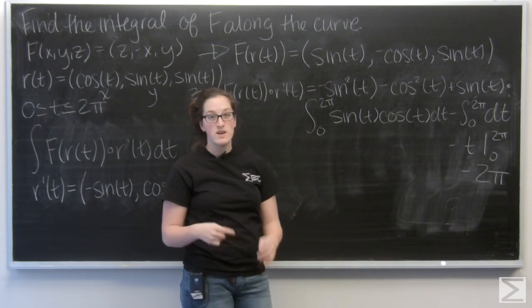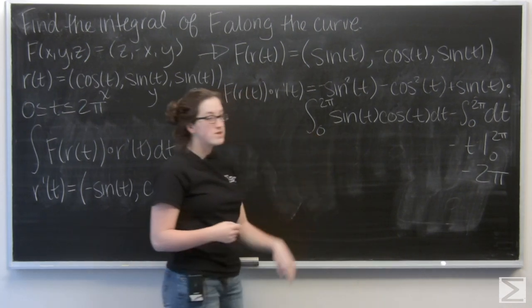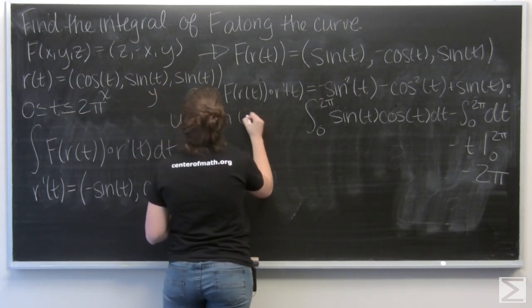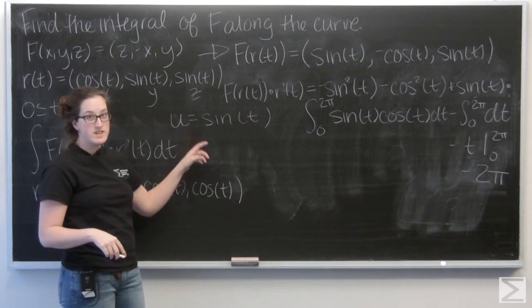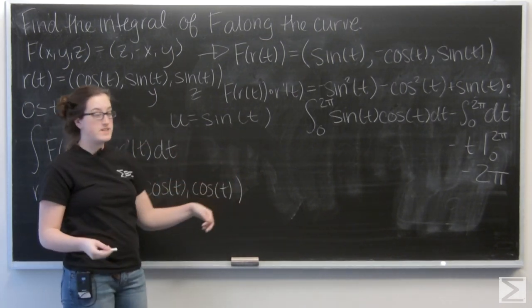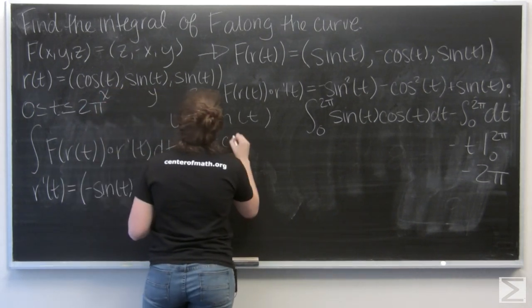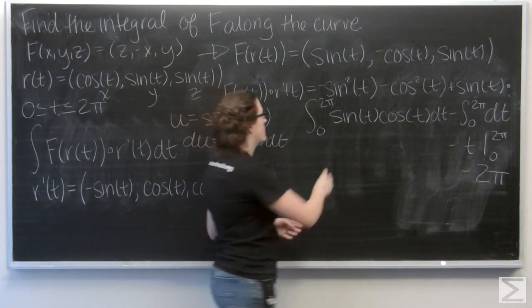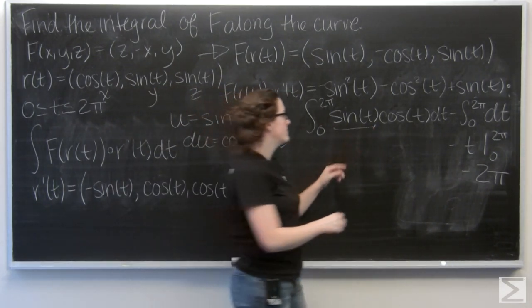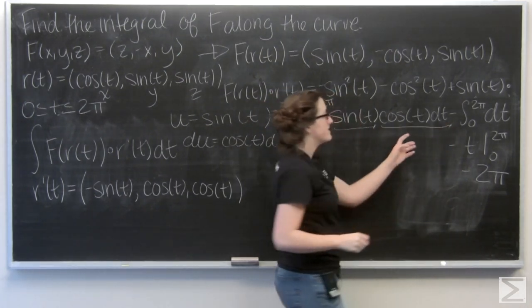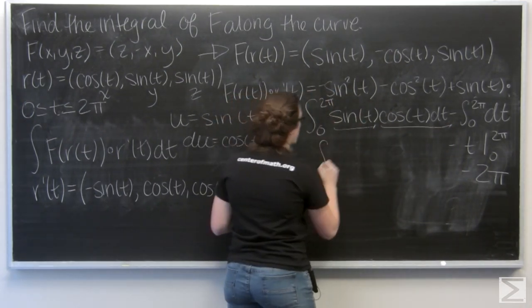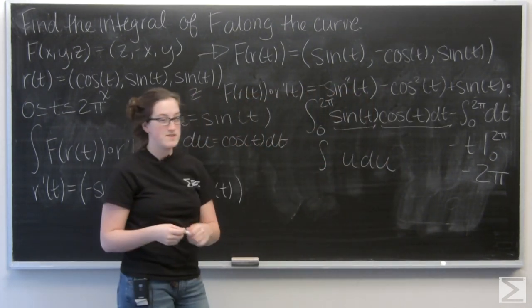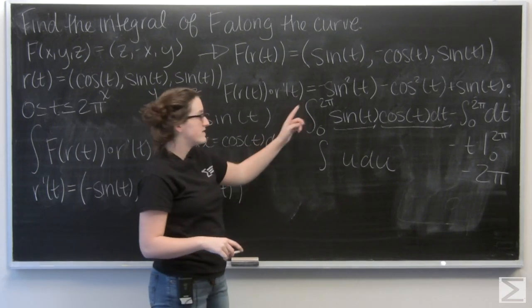Now let's do the harder one. Use substitution, and I'm going to set u equal to sine of t. So when I differentiate that, I'm going to get du equals cosine t dt. So I can say that this portion is my u, and this portion is my du. And the integral of u du looks a lot easier than what I had to begin with. But I need to change my bounds of integration.